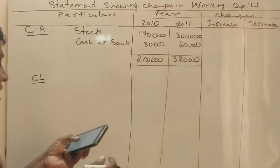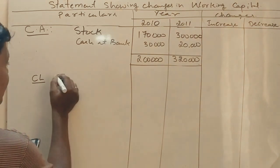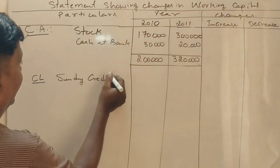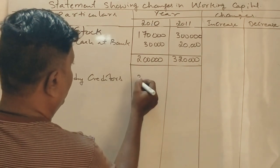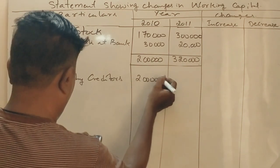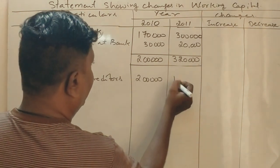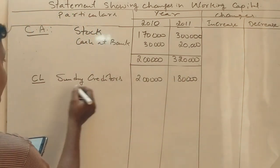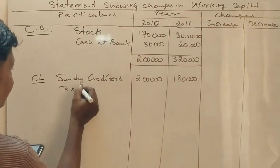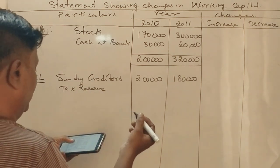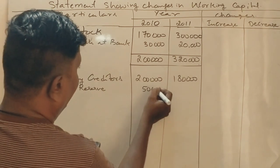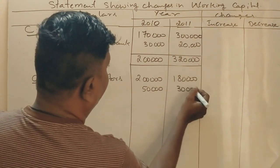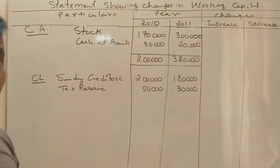Now current liabilities. Sundry creditors: 2,00,000 and 1,80,000. Tax reserve — this is tax provision. There is an adjustment question: is tax reserve a current liability or non-current liability? Tax reserve, or provision for taxation, is treated as a current liability.